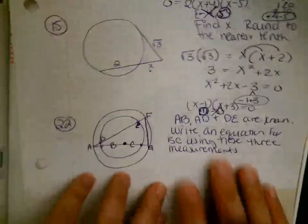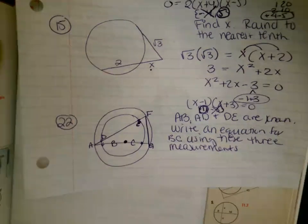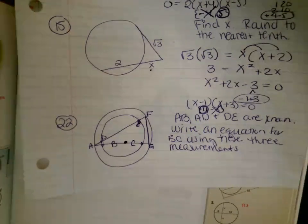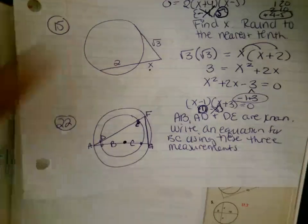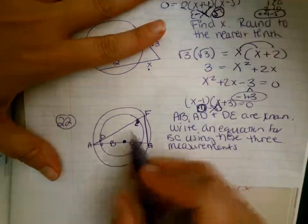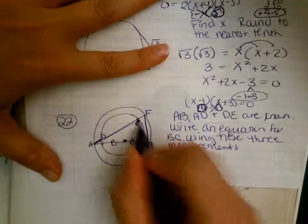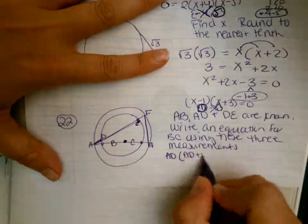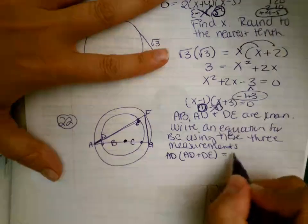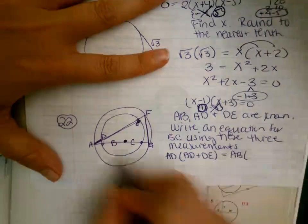And then on number 22. It says that AB, AD, and DE are known. Write an equation for BC using these three measurements. So we're going to use the same exact thing. Outside times whole equals outside times whole. So AD times AD plus DE equals outside AB times AB plus BC.